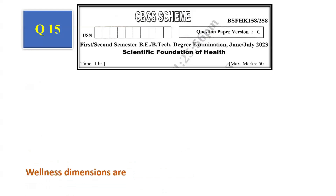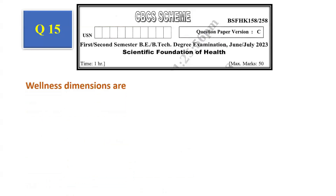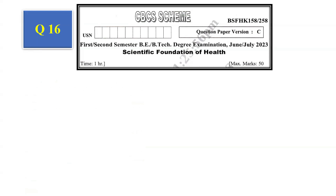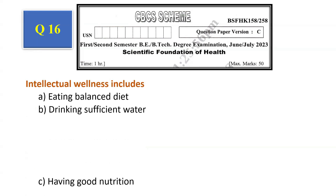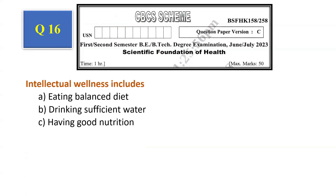Question number 15: Wellness dimensions are — 4, 2, 6, 8. The answer is 4, that is option A. Question number 16: Intellectual wellness includes — eating balanced diet, drinking sufficient water, having good nutrition, mental exercise. The answer is mental exercise.